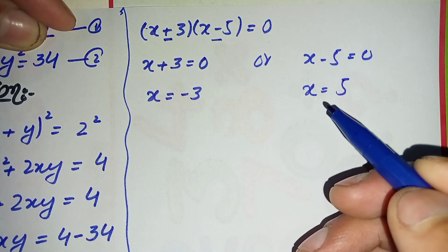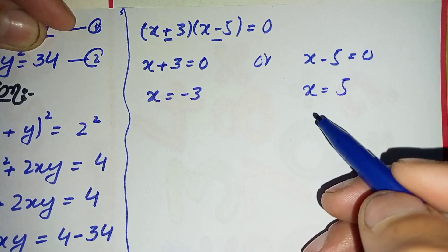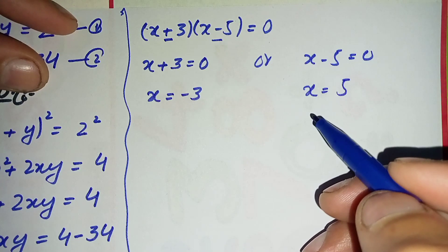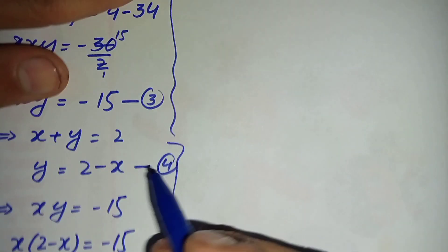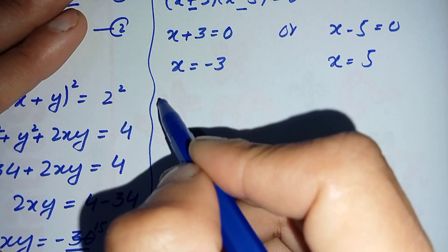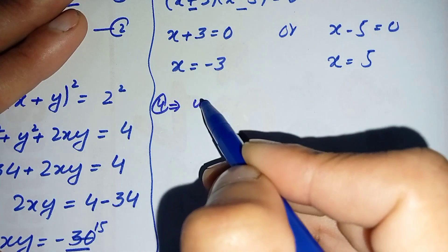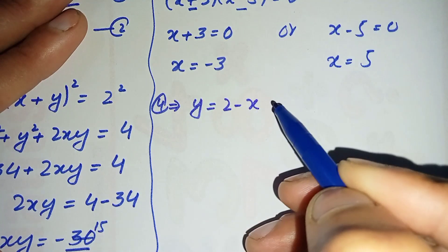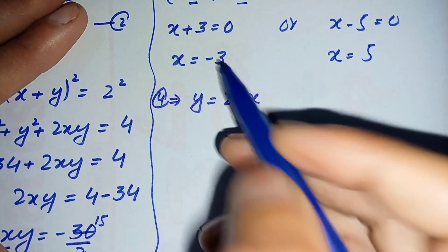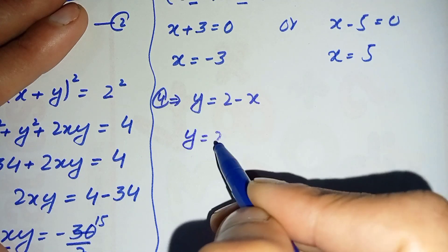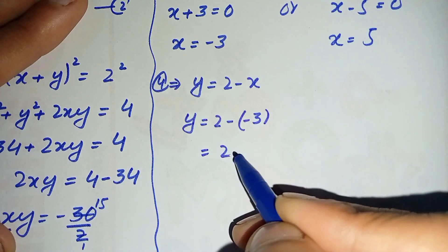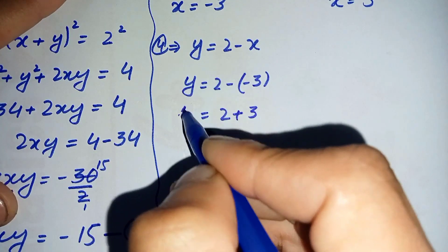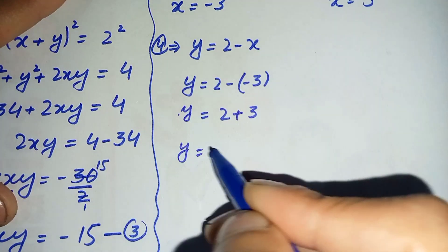We now have two values of x. To find the corresponding values of y, we substitute each into equation number four: y is equal to 2 minus x. First, substituting x is equal to minus 3: y becomes 2 minus (minus 3).